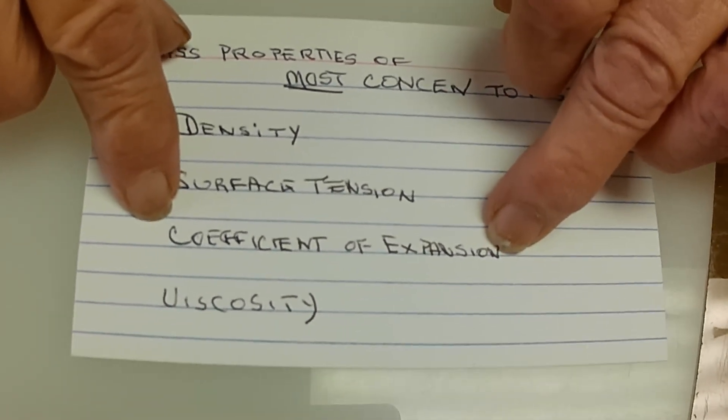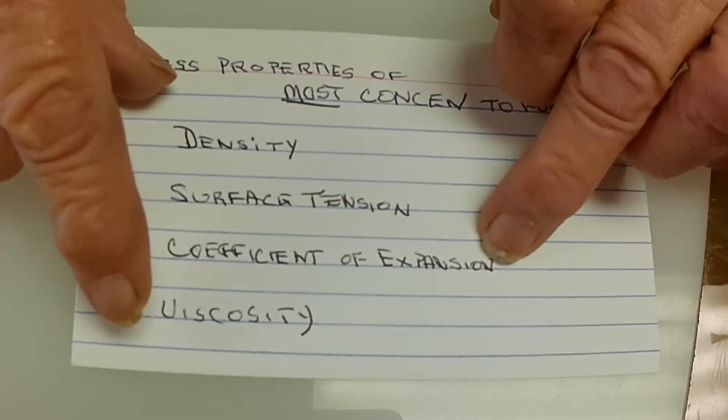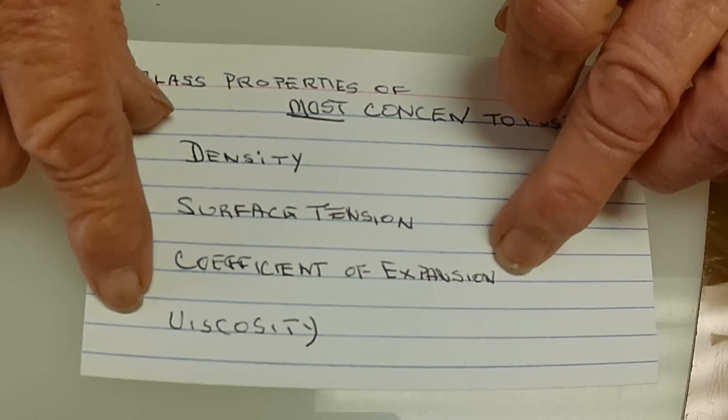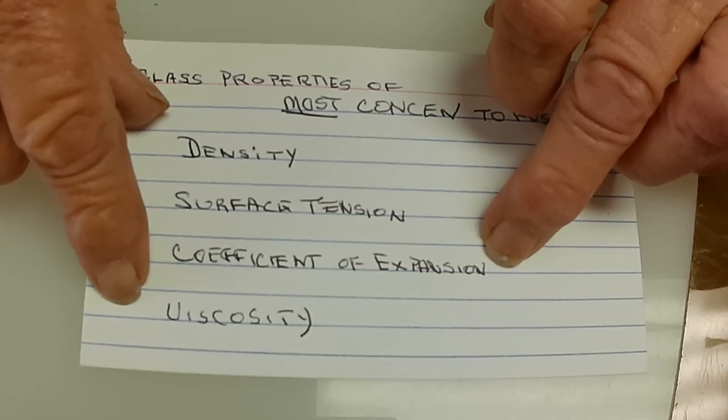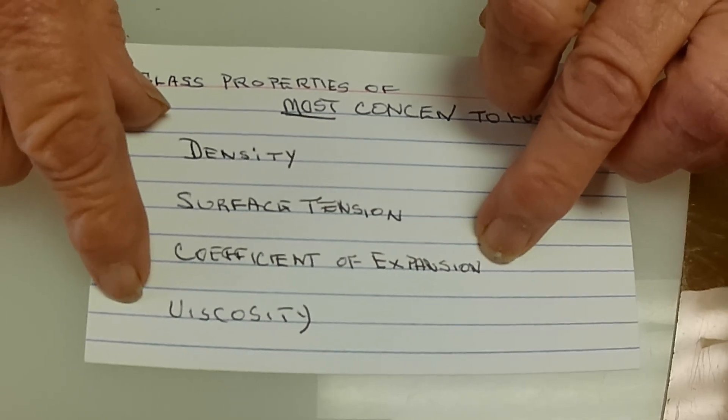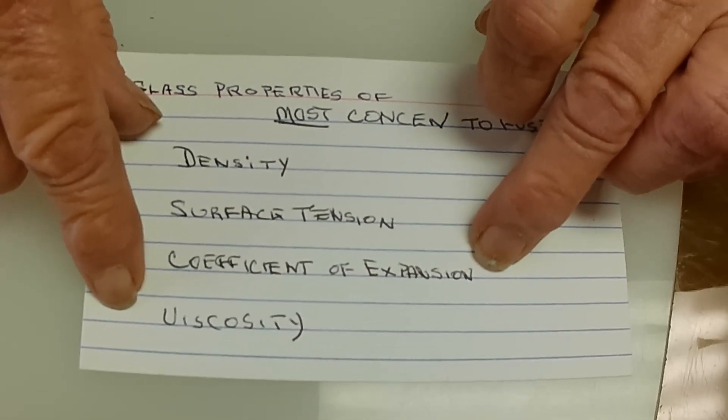Coefficient of expansion. Viscosity. Viscosity becomes important when you're doing a raking, because we want the glass fluid enough to be easily moved in the kiln.